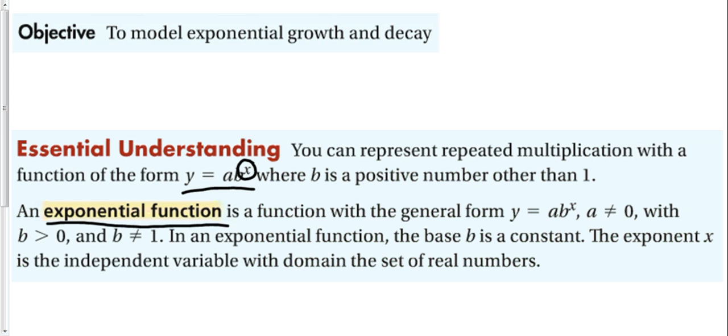So let's talk about an exponential function. An exponential function is a function with the general form y equals a b to the x power. Again, the exponent is the variable. That's what makes it an exponential function. A is not equal to 0. If it did, everything here would go to 0. b is greater than 0 and b is not equal to 1. In the exponential function, the base b is a constant. The exponent x is the independent variable with the domain the set of real numbers.